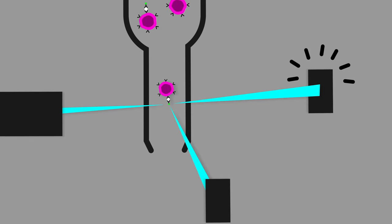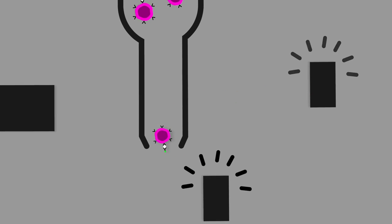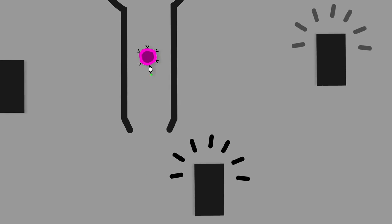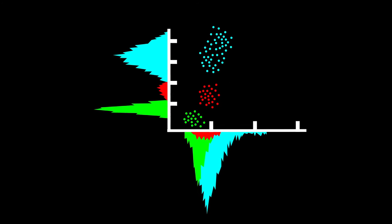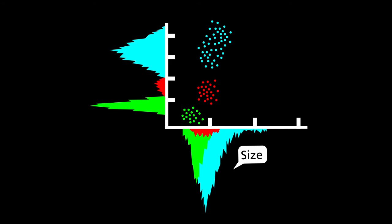The signal from the forward and the side scanners, after being processed, form a bidimensional plot, allowing us to determine the size and complexity of the particles detected.